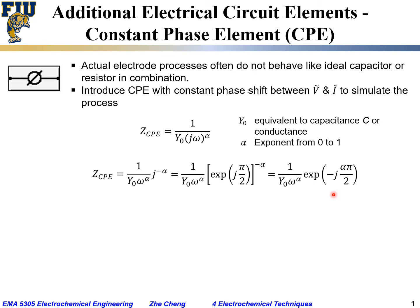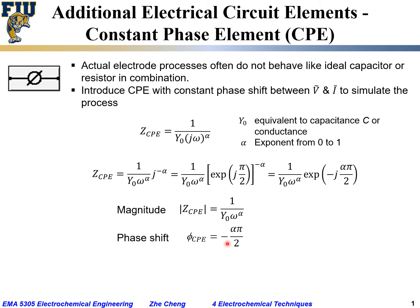Now we write the impedance for the Constant Phase Element in polar format. The magnitude |Z_CPE| is the pre-exponential term: 1 over Y₀·ω^α. That gives us the magnitude. The phase shift φ_CPE is just minus alpha times π/2, i.e., φ = −α·π/2. So for this CPE we have the complex impedance expressed with its magnitude and phase shift.